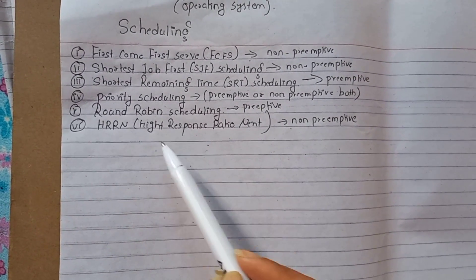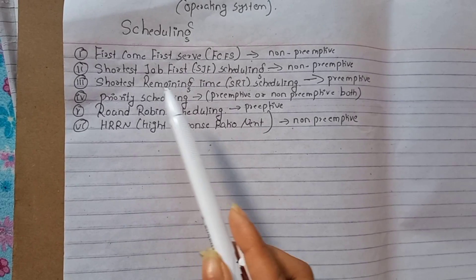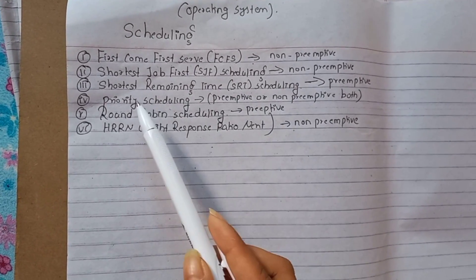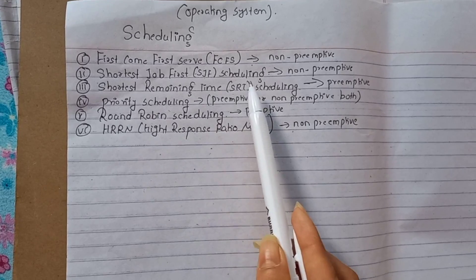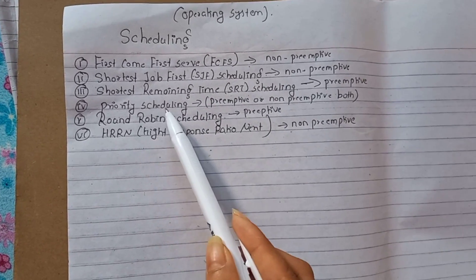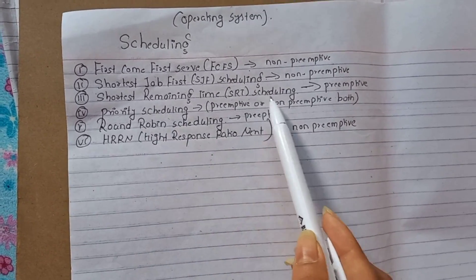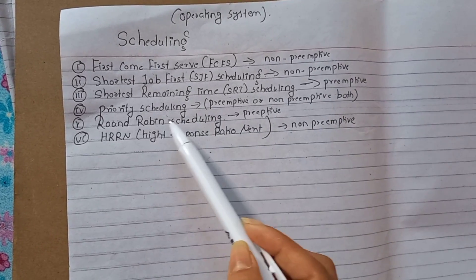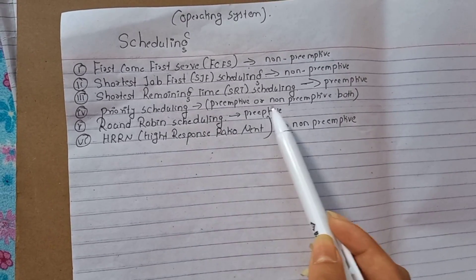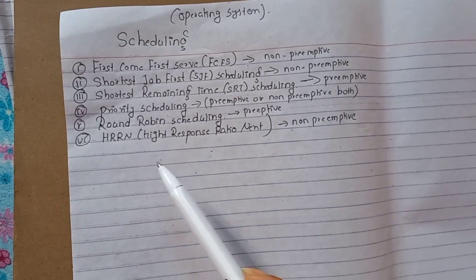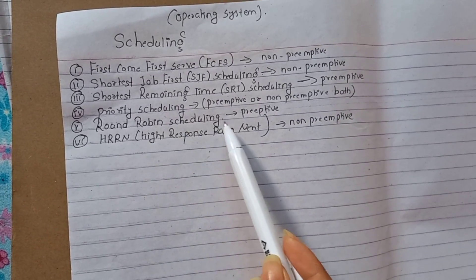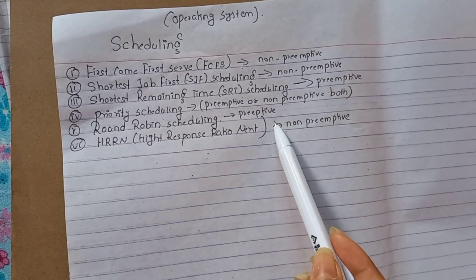First, FCFS scheduling is a type of non-preemptive scheduling. Second, Shortest Job First is non-preemptive scheduling. Third, Shortest Remaining Time is preemptive scheduling. Fourth, Priority scheduling — it can be both preemptive or non-preemptive scheduling. Fifth, Round Robin scheduling is preemptive scheduling.